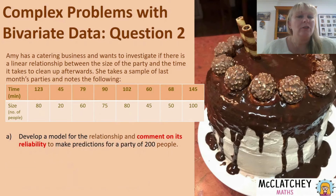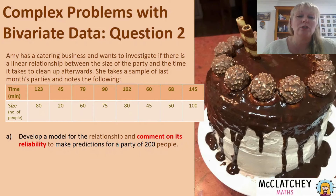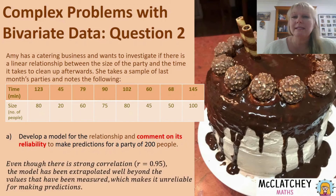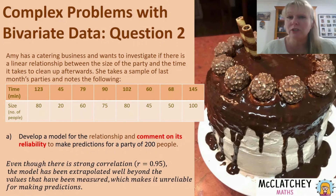Now I need to comment on the reliability of that prediction. We know that we've been doing extrapolation because the maximum party Amy has actually catered is 100 people — she really has no data for a party of 200. Based on this model she's expecting it will take over four hours to clean up. Even though there's strong correlation — r equals 0.95, which you can pull from your calculator using that option five — because it's extrapolated well beyond anything Amy has ever experienced or measured, it is going to be very unreliable for making predictions.